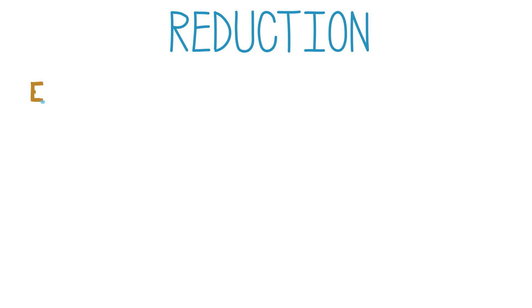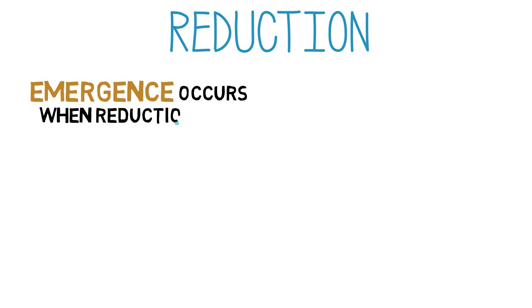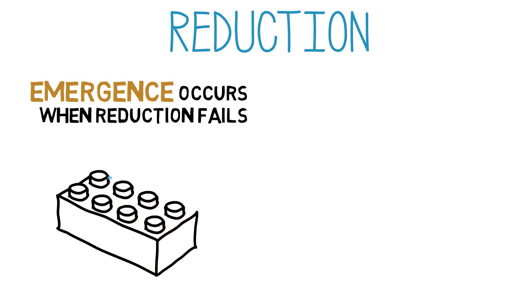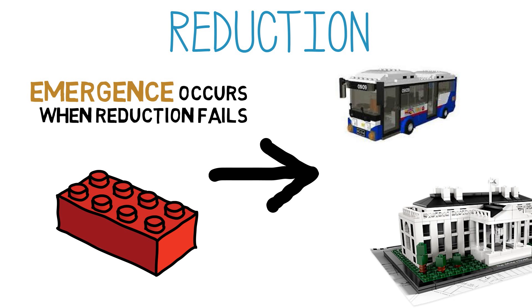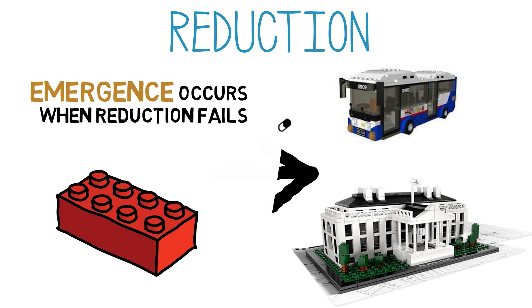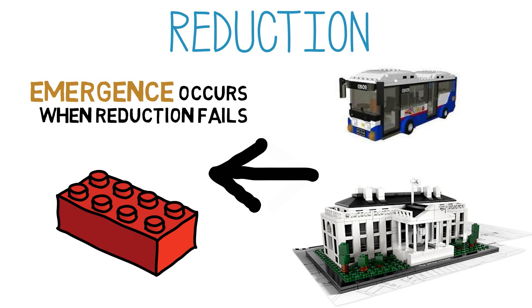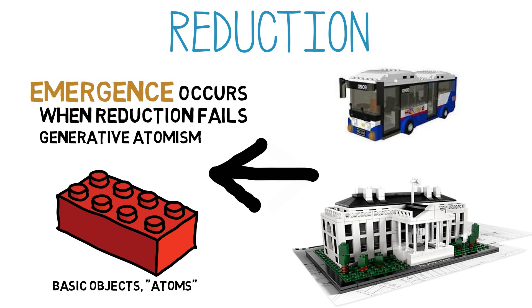Let's begin with reduction, because emergence is often thought to occur when reduction fails. Reduction is fairly easy to understand. Suppose you have a Lego set — those little plastic blocks that snap together. Using those basic building blocks, many different types of object can be constructed, ranging from a bus to a replica of the White House. You could also take the bus and decompose it into its original component blocks. Reductionist methods are often based on this kind of generative atomism approach: you have a set of basic objects and everything else is nothing but those objects arranged in different ways.